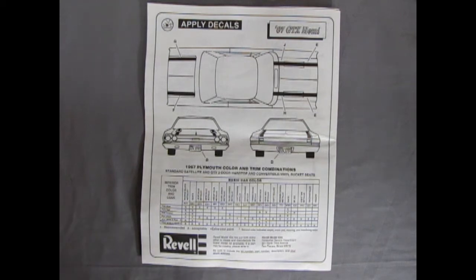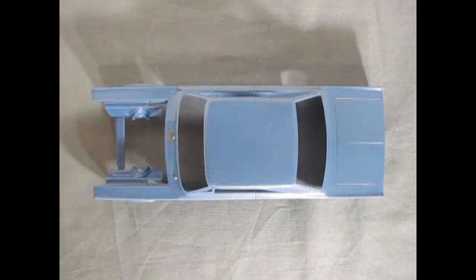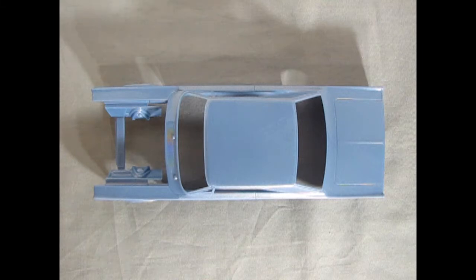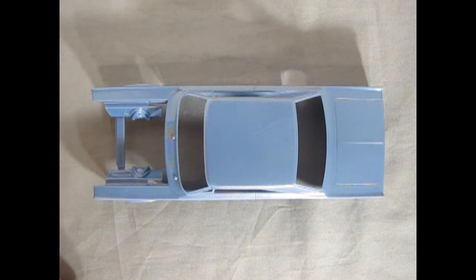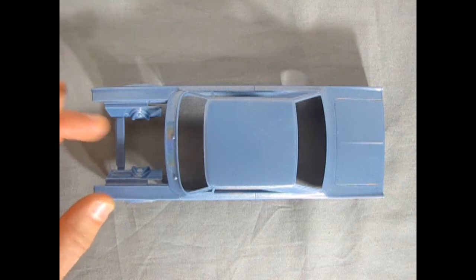Here we have our body for our Plymouth GTX. And as you can see, it's molded in this nice light metallic blue. It almost kind of blends in with the gray matte here. There is a section here that you need to remove out of the body. That's just to help brace the front fenders so they don't like come in in the cooling process.